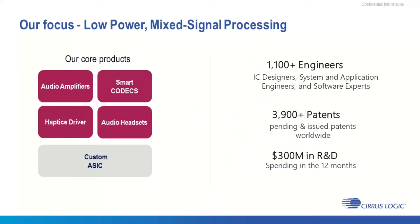The main products we make are audio amplifiers, codecs, decoders, and haptic drivers. To give you an idea of where they're used: audio amplifiers drive the speaker of your smartphone, and haptic drivers control the vibration motor, giving you tactile feedback on your laptop or smartphone. There's a lot of R&D going on, and more and more of these products now also use digital signal processors.